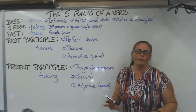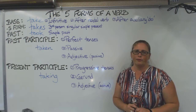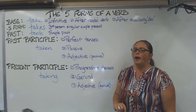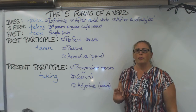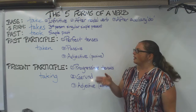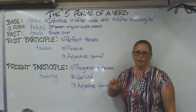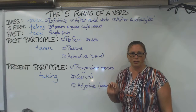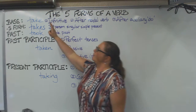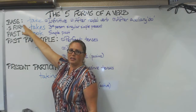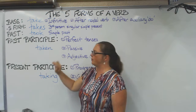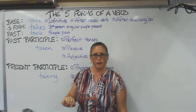This is going to be a quick overview of the five forms of a verb — not tenses, but forms. Every verb has five forms, although some of them may be the same in certain verbs, like the past and past participle can sometimes be the same. The five forms are: the base form, the s form, the past, the past participle, and the present participle.